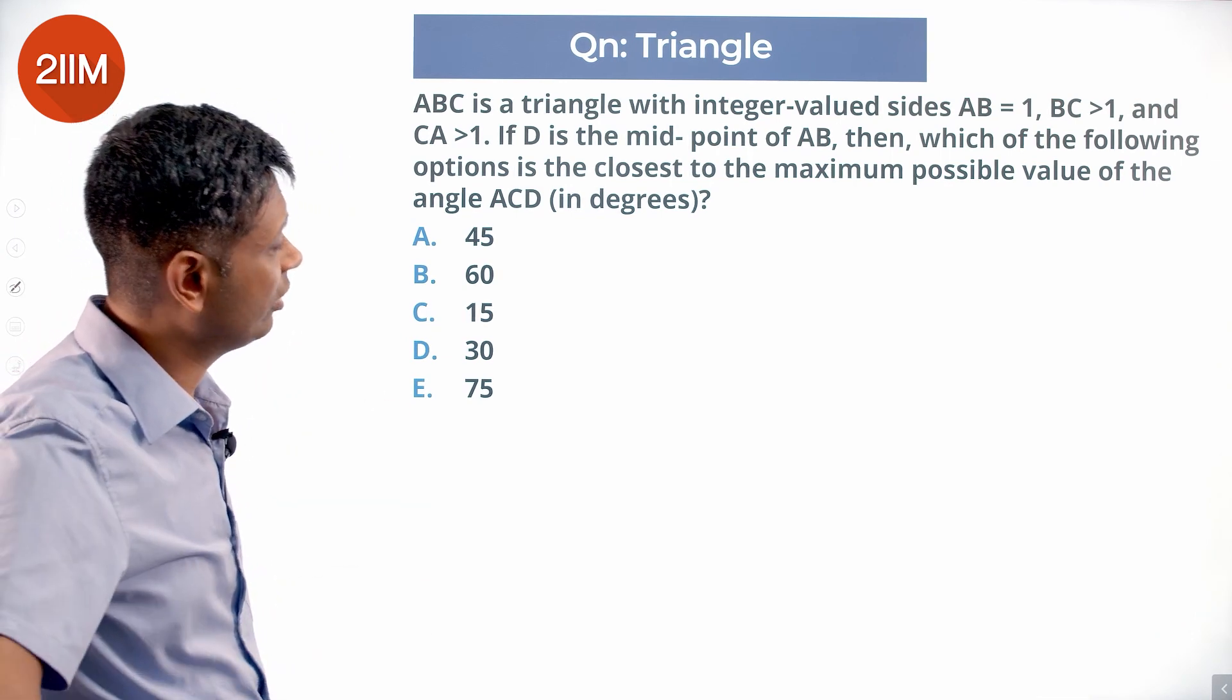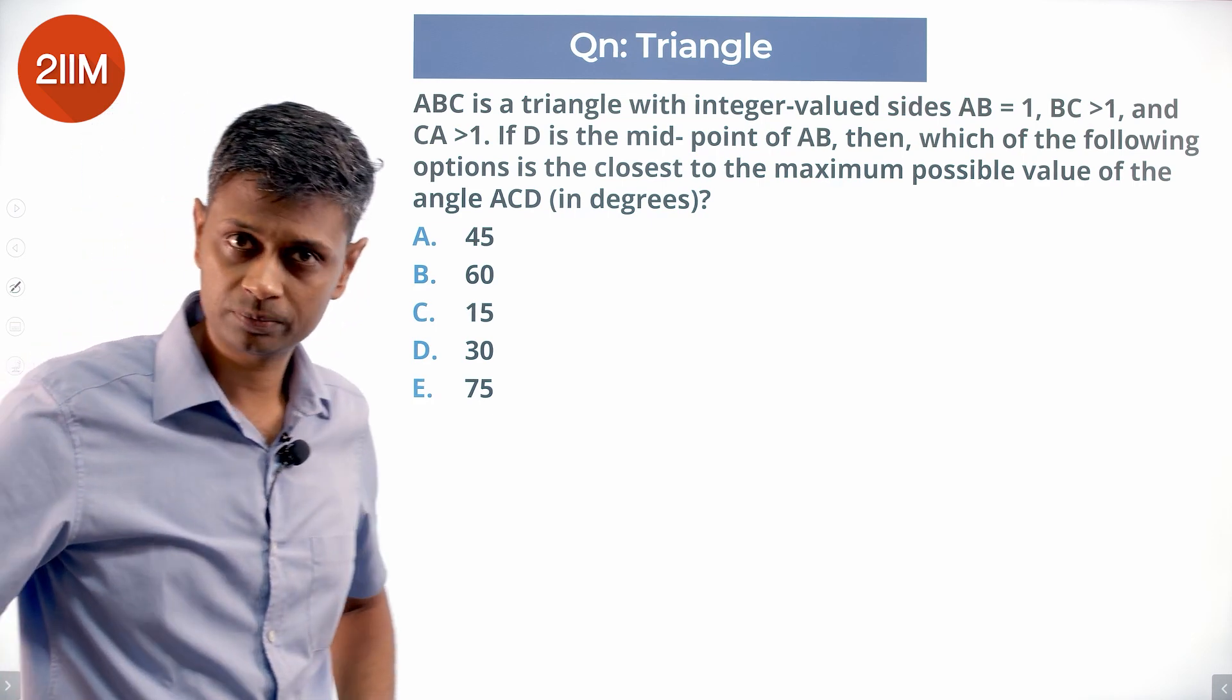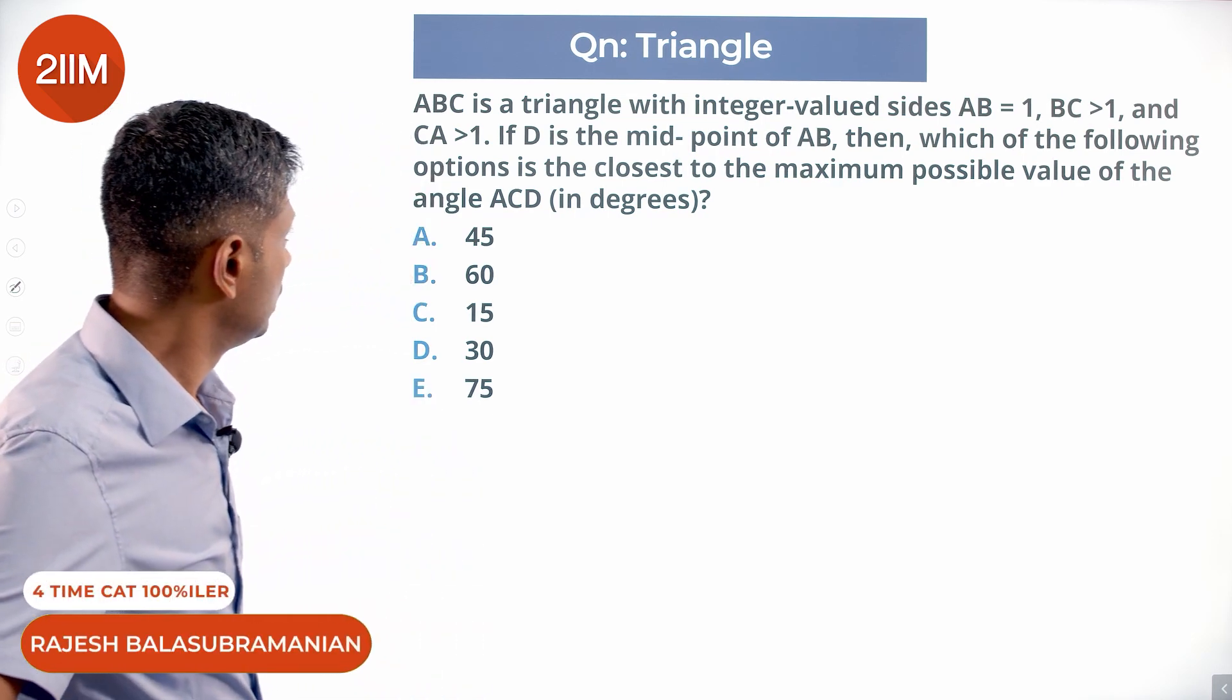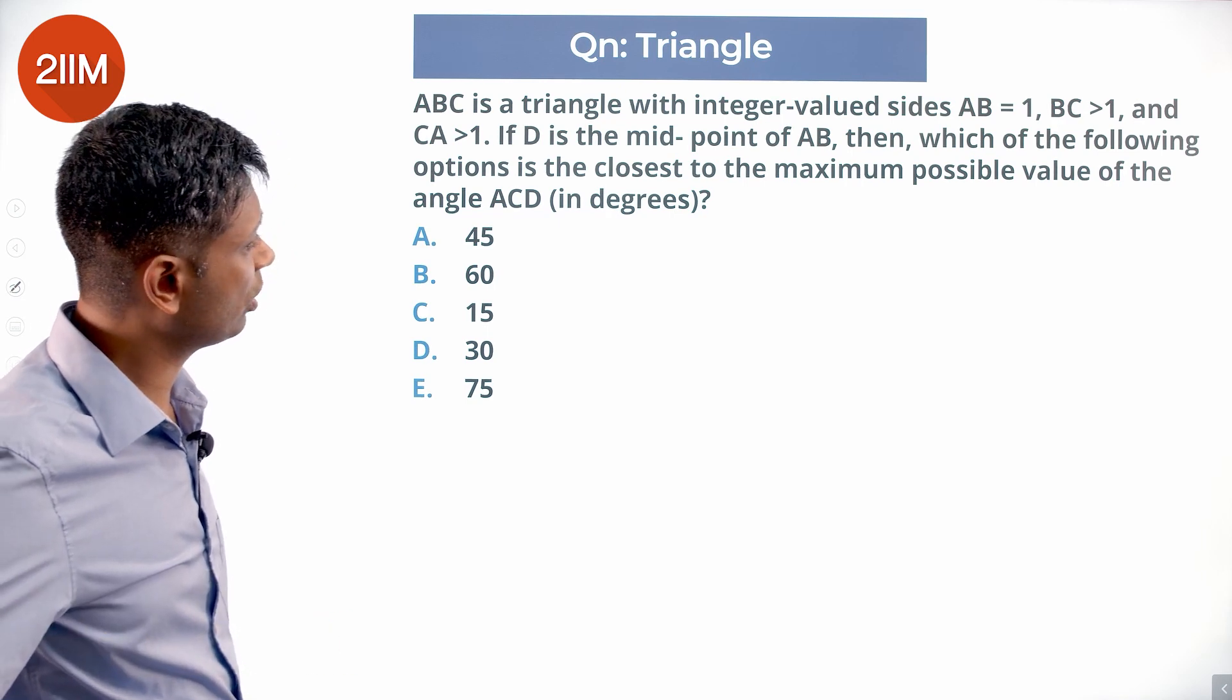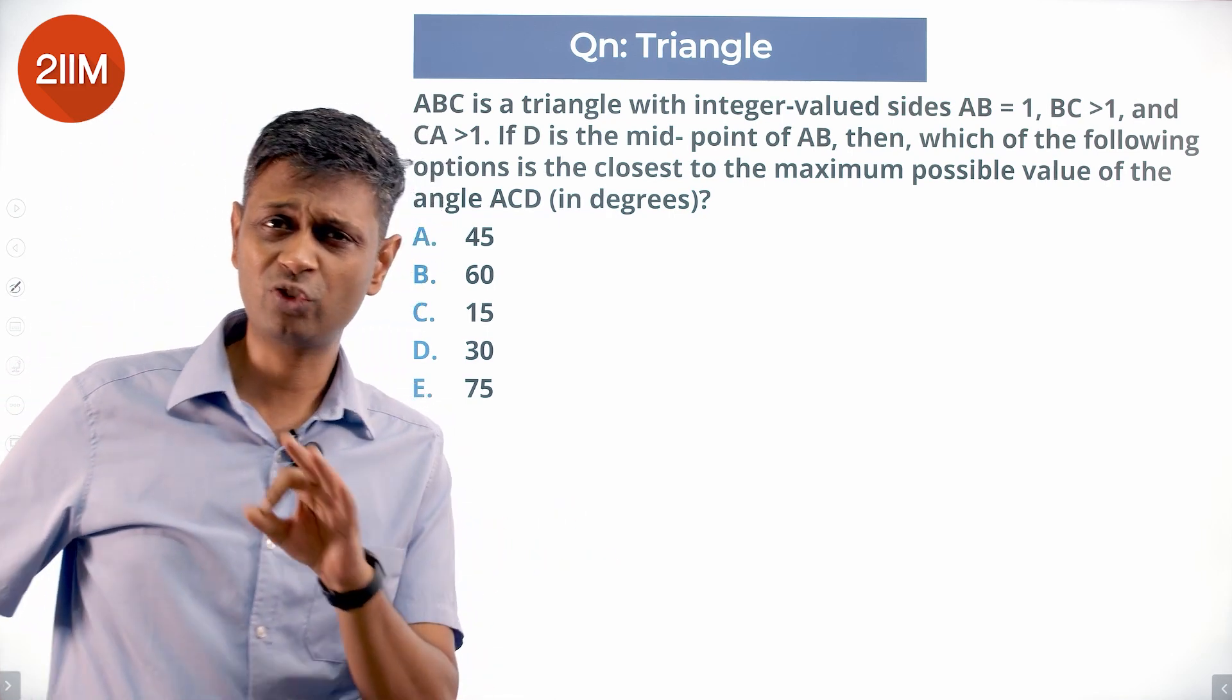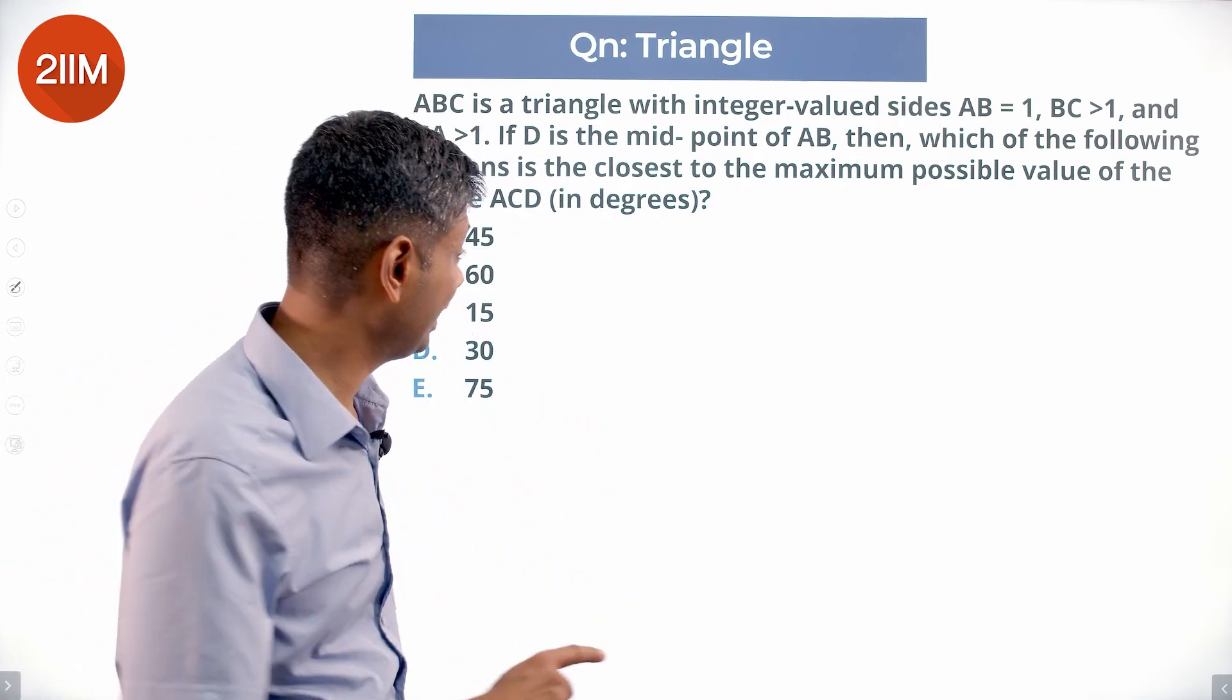ABC is a triangle with integer valued sides AB equal to 1, BC greater than 1, and CA greater than 1. If D is the midpoint of AB, then which of the following options is closest to the maximum possible value of angle ACD? First of all, integer sides, one side is one. Think about it: integers 1, x, y.